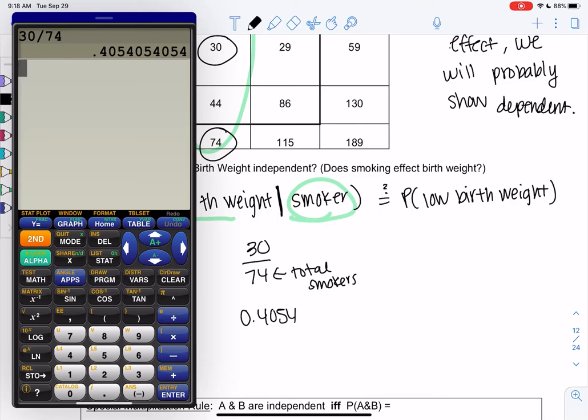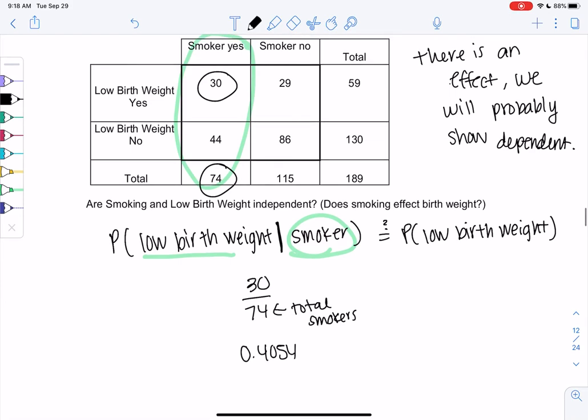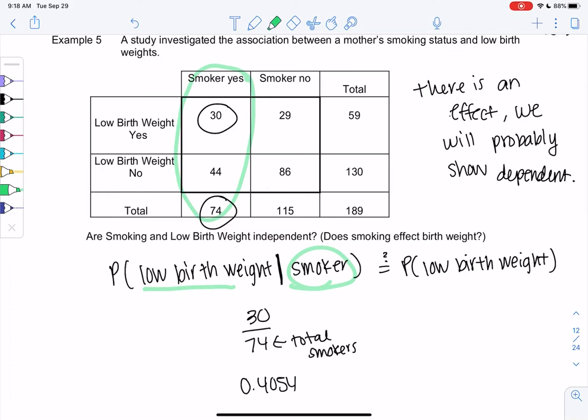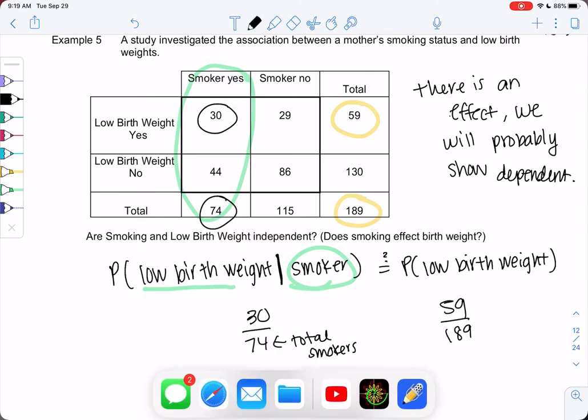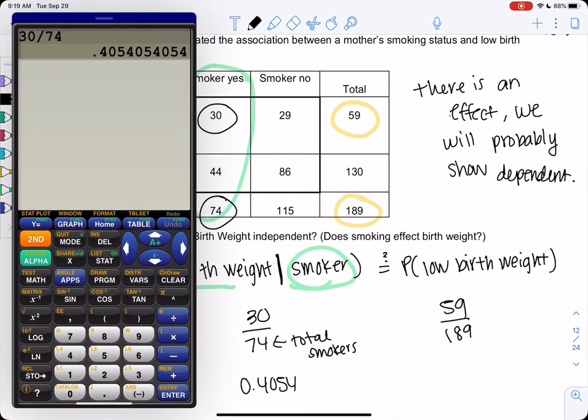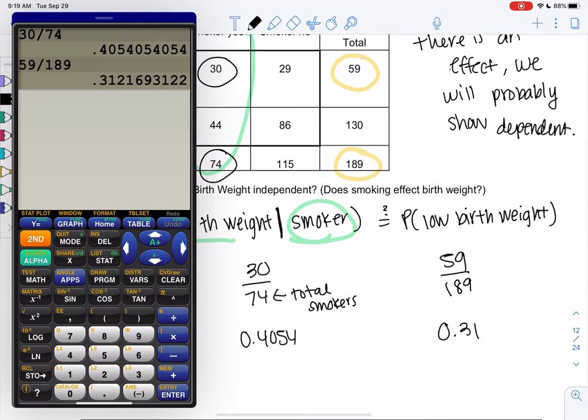So then what's low birth weight overall? That's what we want to compare this to. Is this a high percent or a low percent? Right? Maybe 40% of babies are a low birth weight to begin with. So now we're just going to look at all of the study. And then how many of them had a low birth weight? 59 out of 189 had a low birth weight, regardless of smoking status. So we're going to do 59 out of 189. And only 30% have a low birth weight.